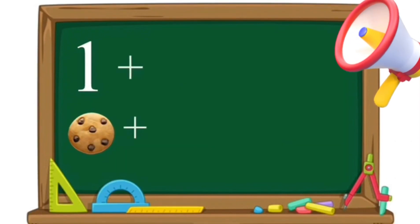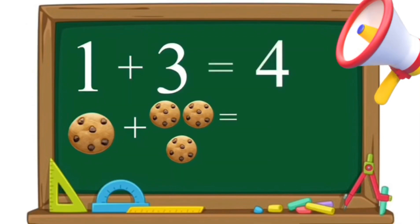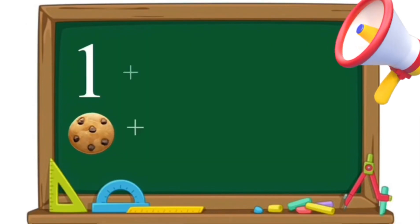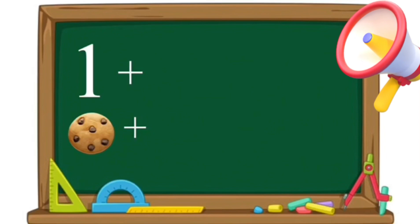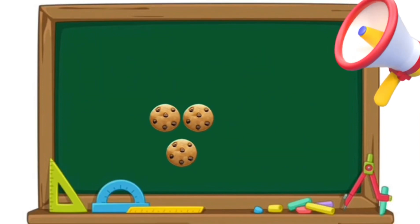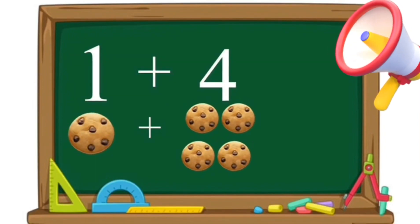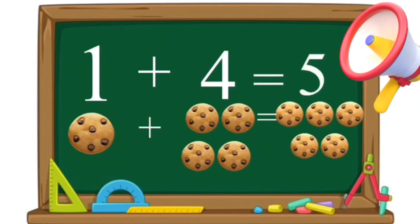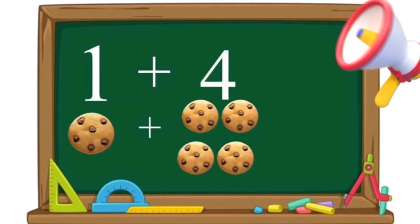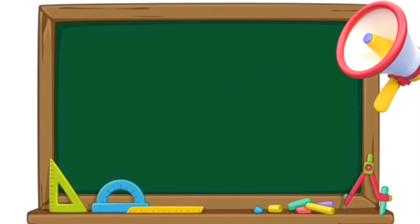One plus three equals four. One cookie plus three cookies equals four cookies. One plus four equals five. One cookie plus four cookies equals five cookies.